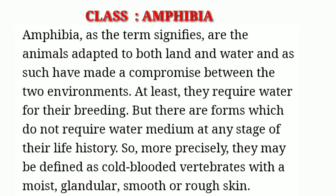Next we have Class Amphibia in Phylum Chordata. Amphibia, as the term signifies, are animals adapted to both land and water — they have made a compromise between the two environments. More precisely, they may be defined as cold-blooded vertebrates with a moist, glandular, smooth and rough skin. They cannot regulate their body temperature with a change in environment.